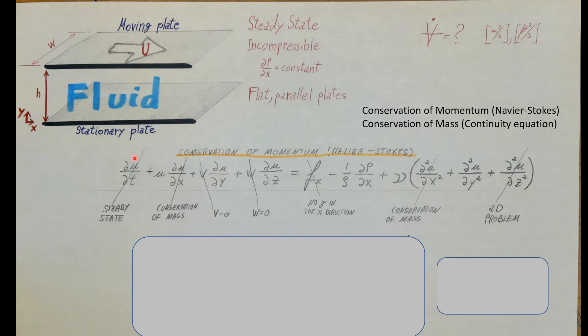We have a whole bunch of terms, but we can cross out quite a few of them. First up: steady state. They told us to consider steady state conditions, which means there is no change with respect to time. In this equation, only the very first term depends on time, so let's go ahead and cross that one out.